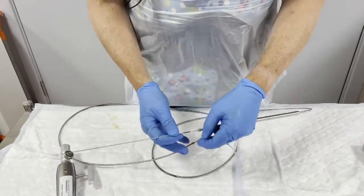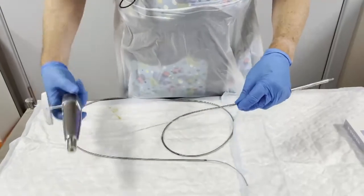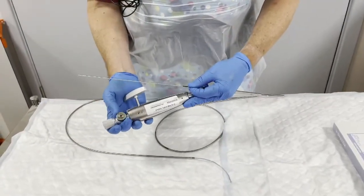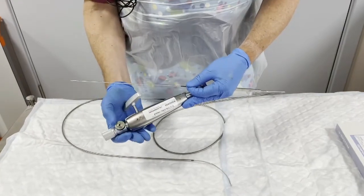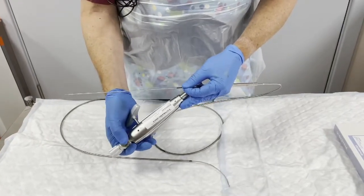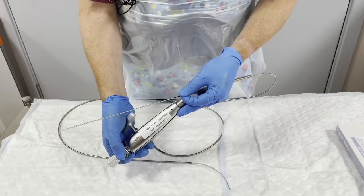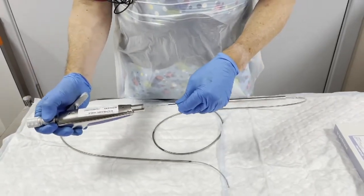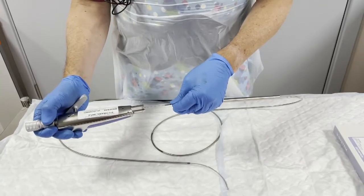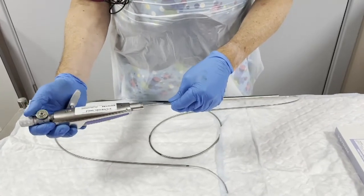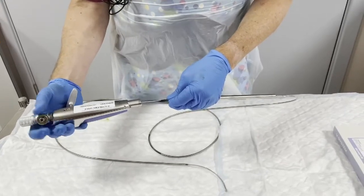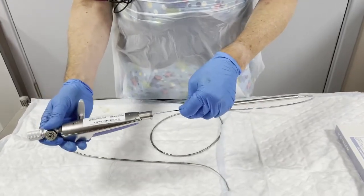Now the important thing is, with the lock unlocked and this depressed, you now pass this right to the back, and then release the lock and then lock it. Lock it nice and tight and then give it a little tug, which confirms that it is locked at the back here.